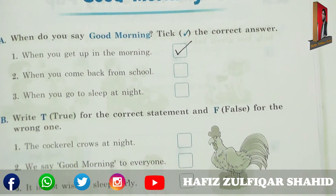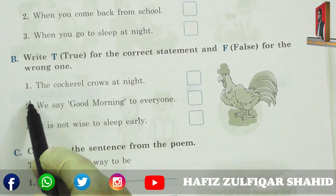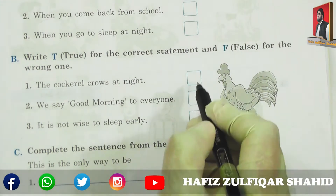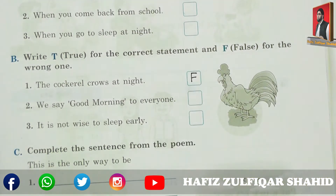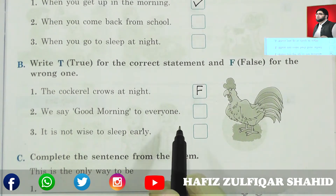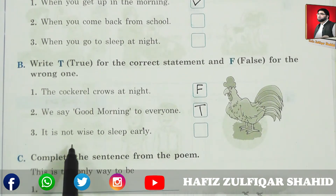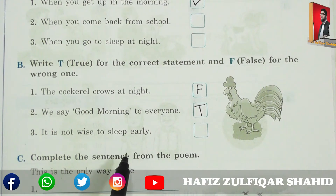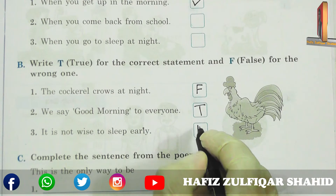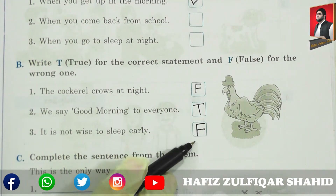Now let's move to the next one — True and False. Number one: the cockerel crows at night. Jo murga hai, kya wo raat ko bolta hai? No. So that's False — write F. Number two: we say good morning to everyone. Hum sab ko good morning kehte hain? Yes — True. Number three: it is not wise to sleep early. Yani jaldi sone mein aapki koi samajhdari nahi hai. Of course it's wrong — because you should sleep early so you can wake up early and be fresh. So the first is False, second is True, and third is False.